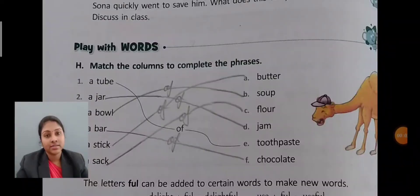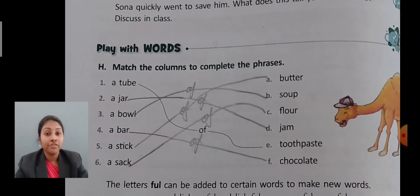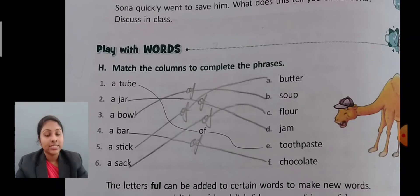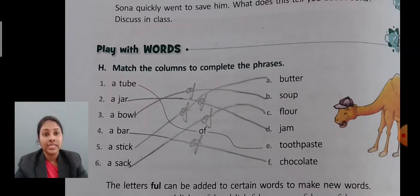Next is 'Play with Words,' that is Exercise H — match the columns to complete the phrases. First: a tube of toothpaste. Second: a jar of jam. Third: a bowl of soup. Fourth: a bar of chocolate. Fifth: a stick of butter. Then: a sack of flour.